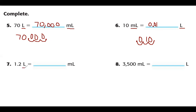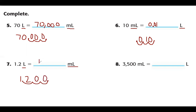Next problem: starting with liters again — the larger unit — so we multiply. We have one and two tenths liters times 1,000. Moving the decimal three places to the right and filling in placeholders gives us 1,200. So one and two tenths of a liter is the same as 1,200 milliliters.